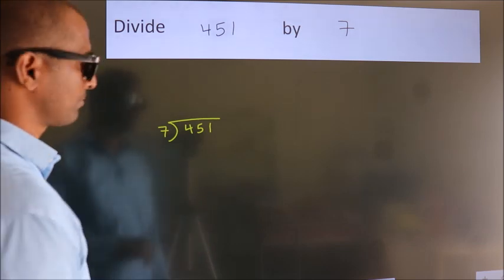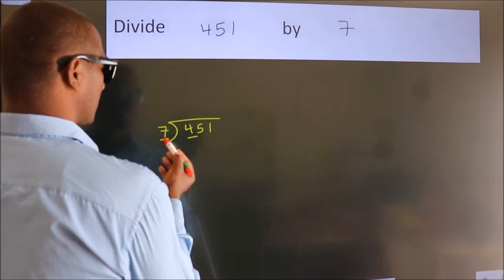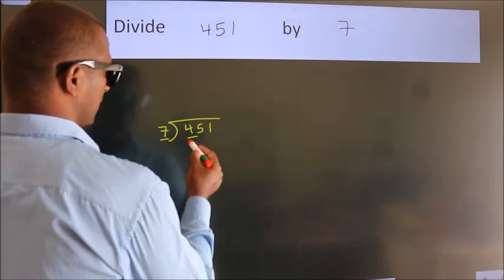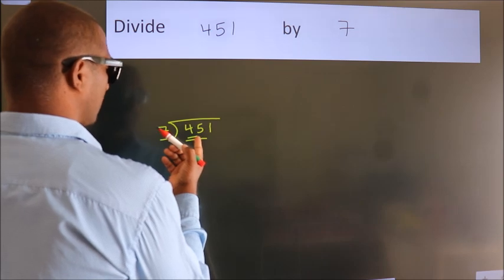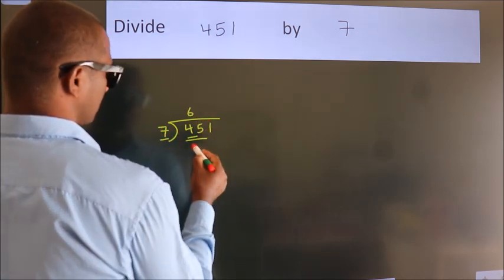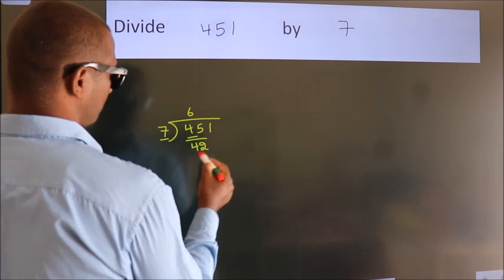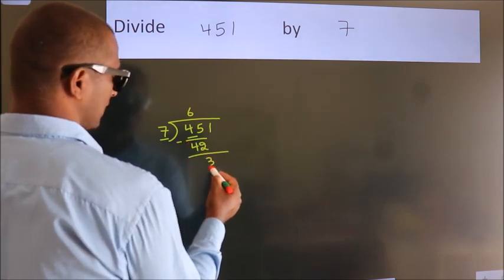Next, here we have 4, here 7. 4 is smaller than 7, so we should take 2 numbers: 45. A number close to 45 in the 7 table is 7 times 6 equals 42. Now we subtract. We get 3.